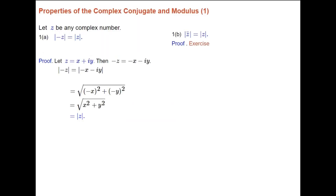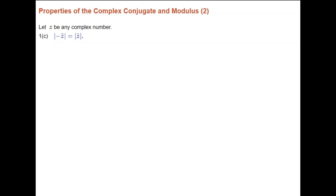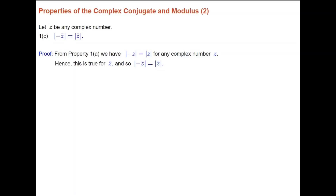Property 1b states that the modulus of the conjugate of z is equal to the modulus of z. The proof is very much the same as 1a, so I'll leave it to you as an exercise. Property 1c says that the modulus of minus the conjugate of z is equal to the modulus of the conjugate of z. This follows from property 1a: since the modulus of minus z equals the modulus of z for any complex number, we replace z with the conjugate of z.